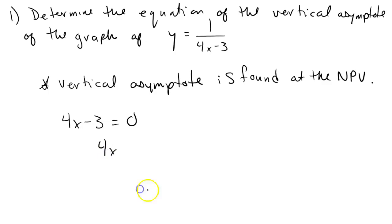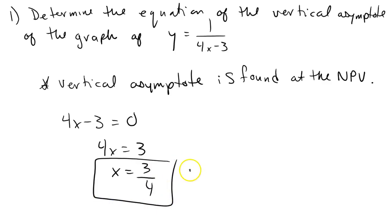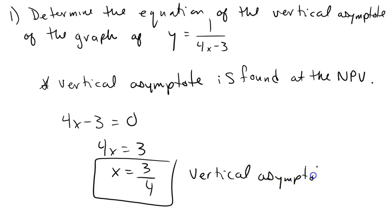4x equals 3, so x equals 3 over 4. We have a vertical asymptote at x equals 3 over 4.